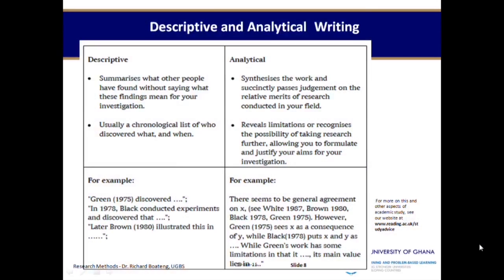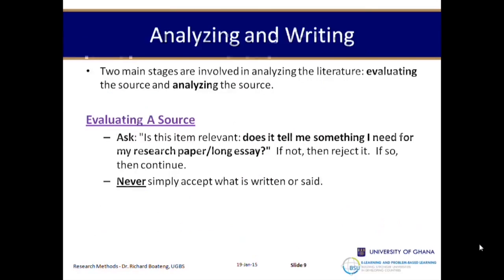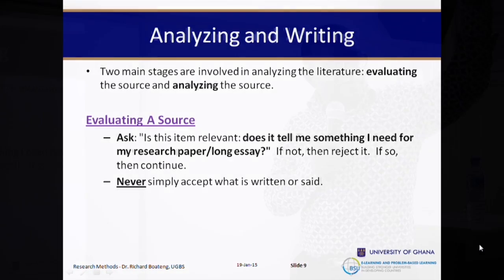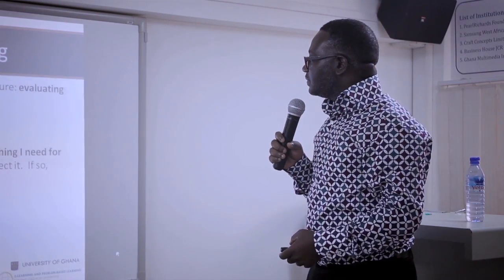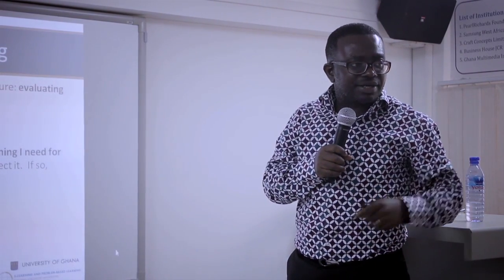The stages of analyzing literature are two: evaluating the source and analyzing the source. That is how you are able to analyze the literature and write. So we learn about analysis of the literature first, before we learn about writing. There are two things in the analysis of literature: evaluating the source and then analyzing the source. When evaluating a source, we ask ourselves: does this article tell us anything relevant to my research paper or the work I'm doing?